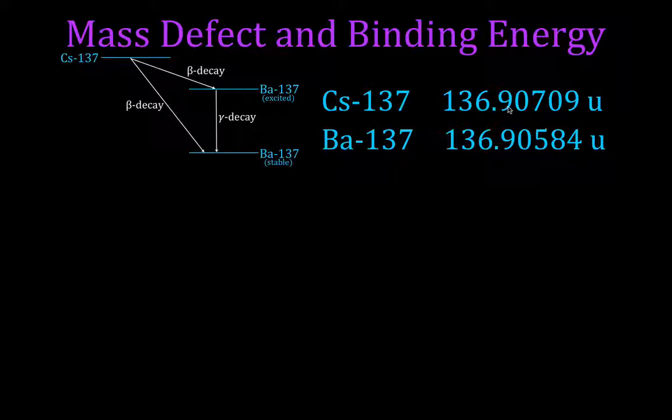You'll notice I have these values expressed to five digits after the decimal point. Because the masses are almost the same - 136, 136, 9090. But when we get out here to the hundred thousandths place, there's a difference. So we usually see these values expressed at least to five or six or even more digits after the decimal point.